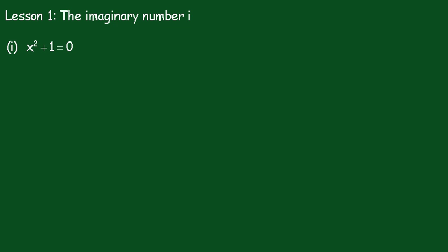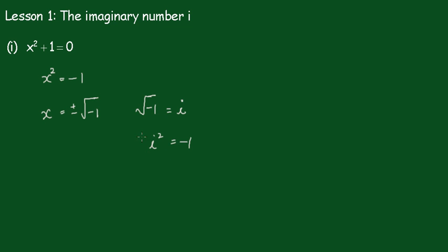What I'll do here, I'll simply take this one across to the other side, and we get x squared equals minus 1, and then take the square root of both sides, so it'll be plus or minus the square root of negative 1. Now, the square root of negative 1 is going to be called i, so we identify the square root of negative 1 as i, or we can say i squared is negative 1 — both are the same thing. So here we replace the square root of negative 1 with i, and our complex solutions are plus or minus i.